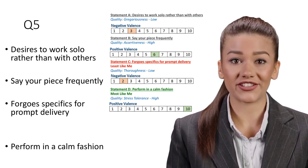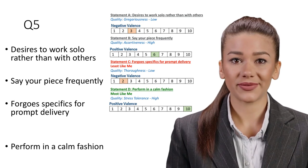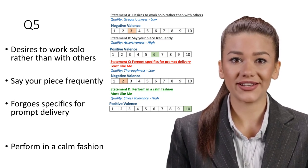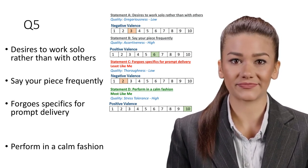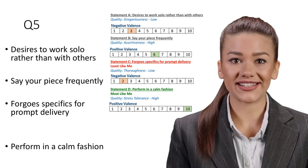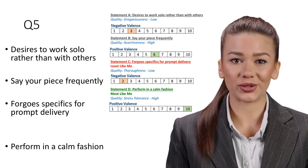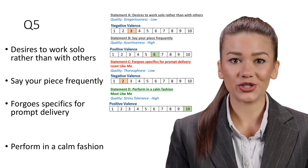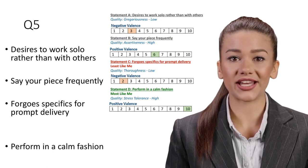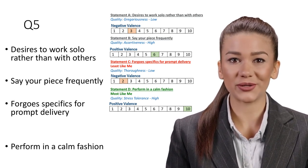Statement C: Forgo specifics for a prompt delivery. Least like me. Quality: Thoroughness, Low. Thoroughness is critical to the success of projects. Details are never irrelevant and although delivery punctuality is important to customers, it should never be at the cost of a quality product.